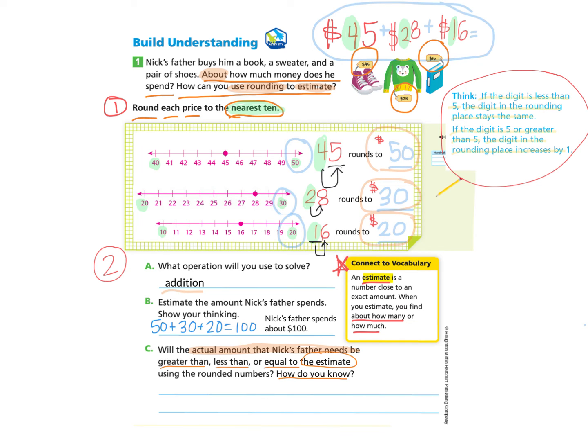So we know that the sum of all of the numbers that we rounded will be greater than the actual amount. So the sum of all of our estimations made a bigger number than if we actually added all of these numbers here. So we can explain our thinking by answering, it will be less than because each number was rounded to the greater 10 and the sum of the actual amount will be less than the sum of the rounded numbers.